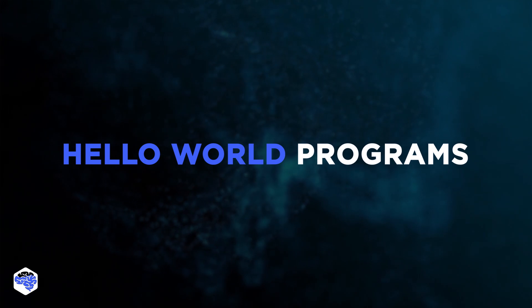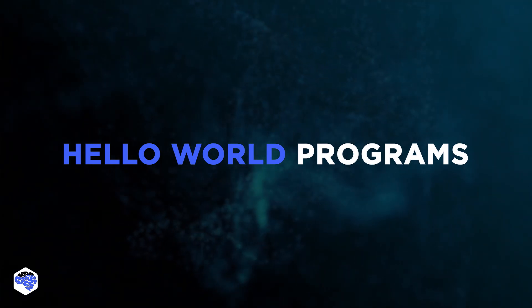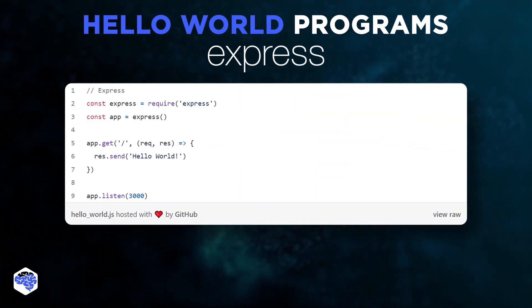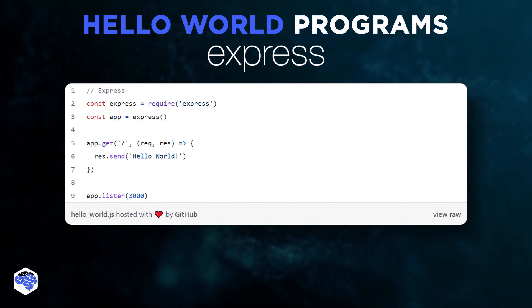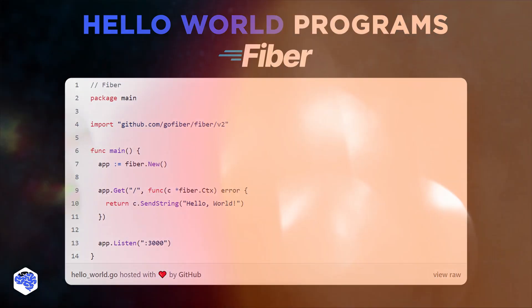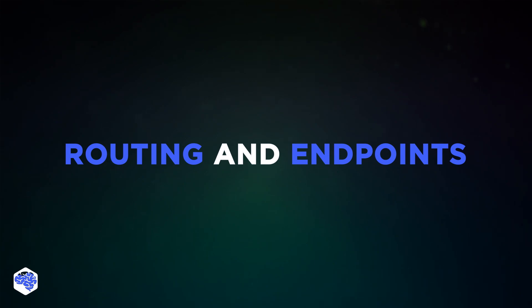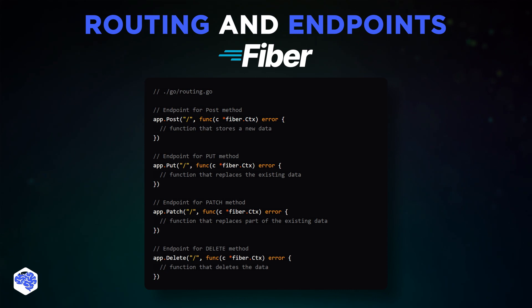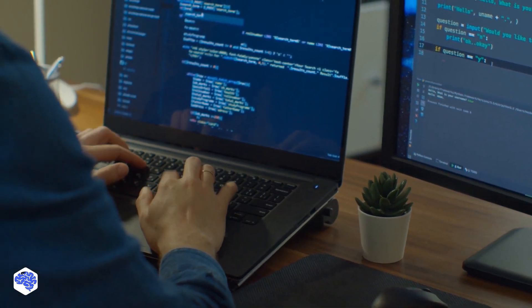A classic example for every web framework is the minimally working Hello World program. Let's take a look at Express first — straightforward, isn't it? Just a couple of lines of code and a full-fledged web server is ready to receive users on the specified endpoint on port 3000. Here's how the same functionality can be implemented with Fiber. Let's also look at the other HTTP methods used to describe endpoints. Even though Express and Fiber are written in different programming languages by different development teams, they have a very similar technical design of built-in functions and working principles. This is what makes Fiber so special among many Go-based web frameworks.